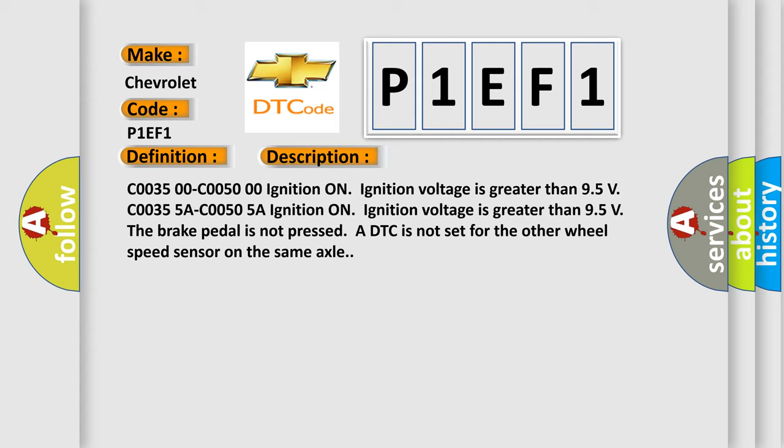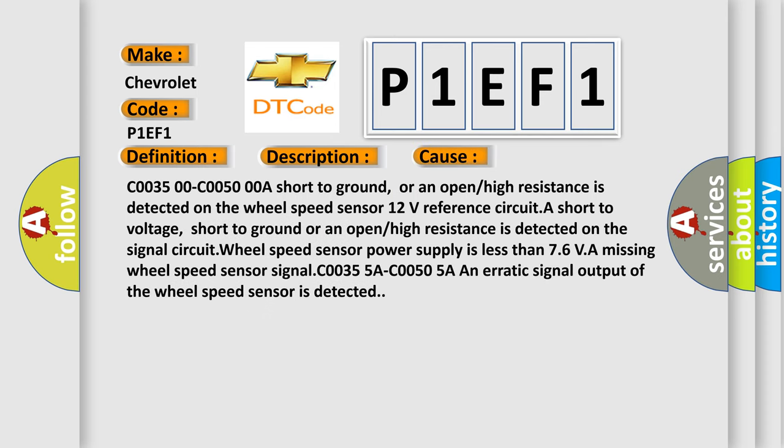This diagnostic error occurs most often in these cases: C0035 00 C0050 00 a short to ground, or an open or high resistance is detected on the wheel speed sensor 12 volts reference circuit. A short to voltage, short to ground, or an open or high resistance is detected on the signal circuit.